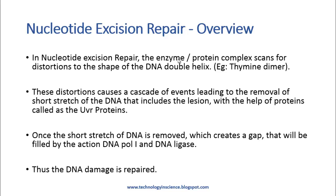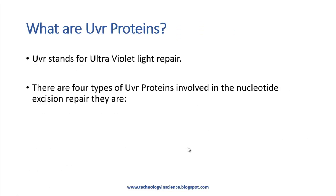These distortions cause a cascade of events leading to the removal of a short stretch of DNA that includes the lesion, with the help of proteins called the UVR proteins. Once the short stretch of DNA is removed, a gap is created that will be filled by the action of DNA polymerase I, and the nick is sealed by DNA ligase. Thus the DNA damage is repaired.